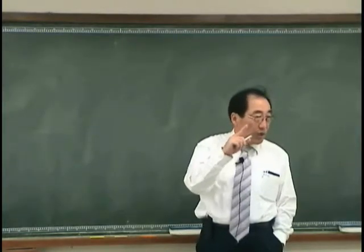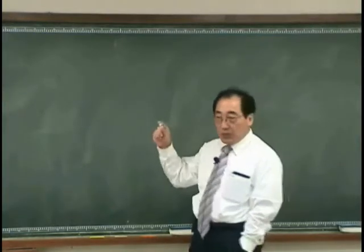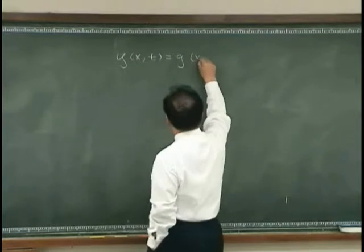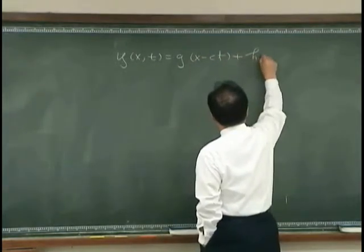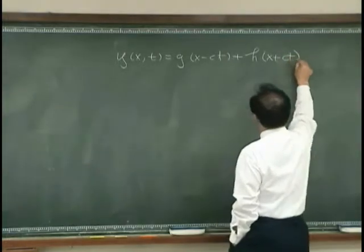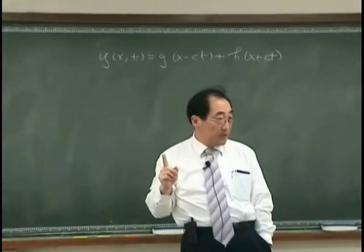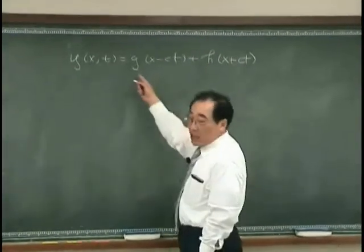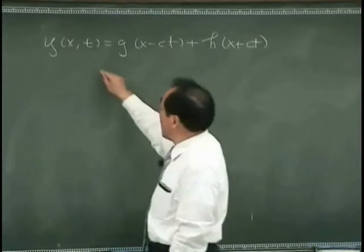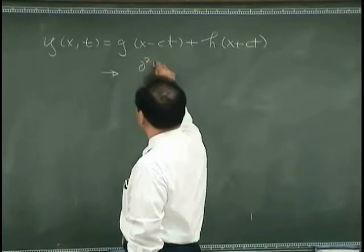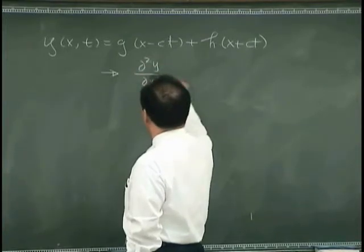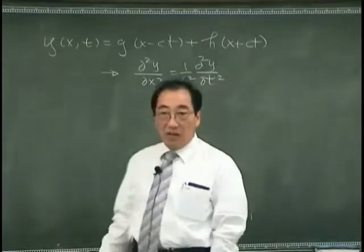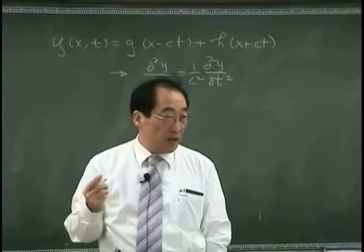One way to get the constitutive relation in this book is that any one-dimensional wave can be written like this. Two waves. And the c is the speed of propagation of function g and h. And we found that this of this governing equation, right? That's what we found. Okay.